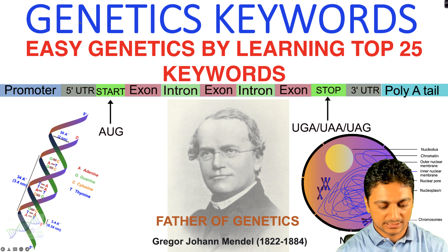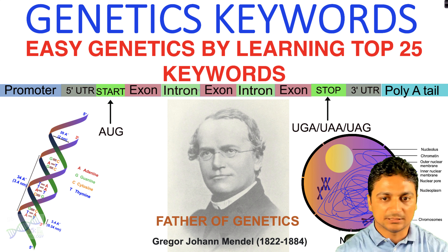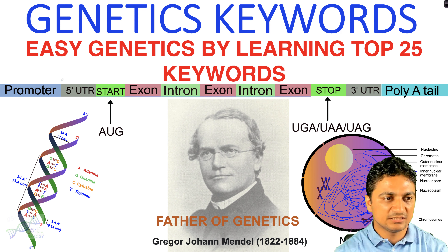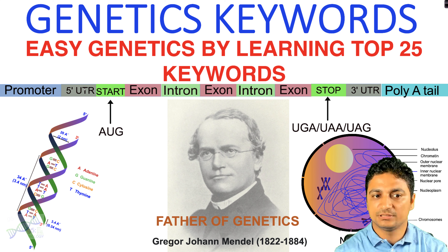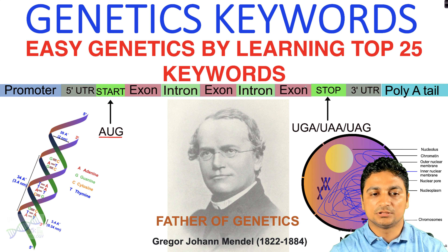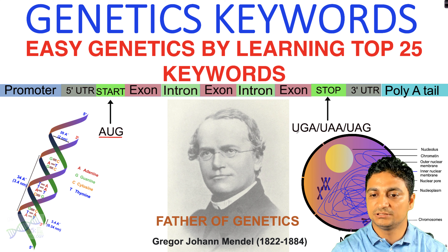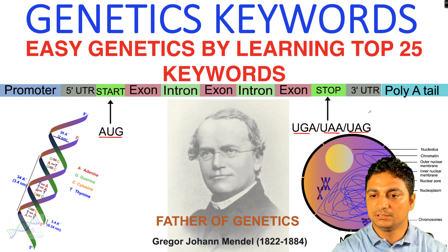Here we can see the structure of a gene. To be a gene there is a promoter, five prime UTR, start codon AUG, exon, intron, exon, intron, exon, intron. There are multiple exons and introns in a gene, and then it has a stop codon which is UGA, UAA, and UAG, and it has a three prime UTR and poly A tail.